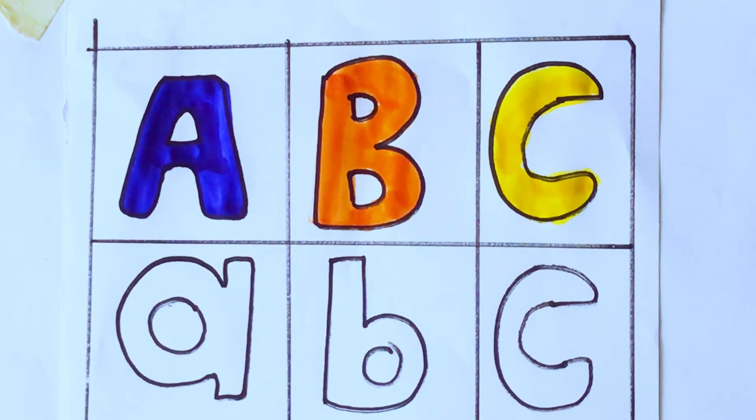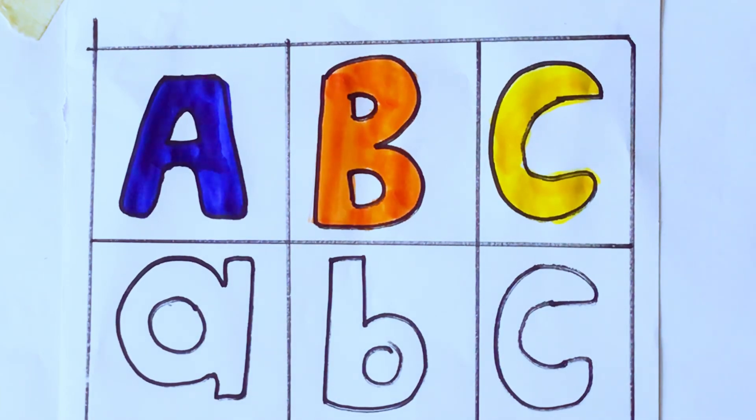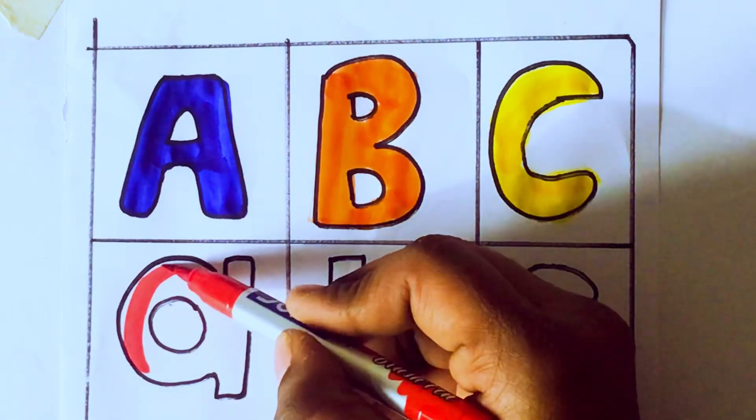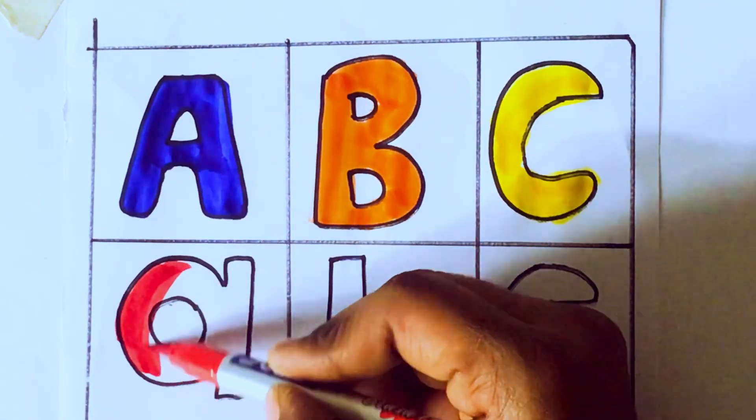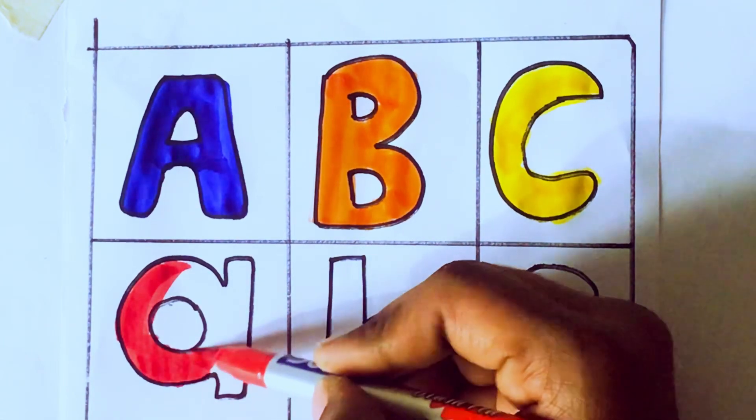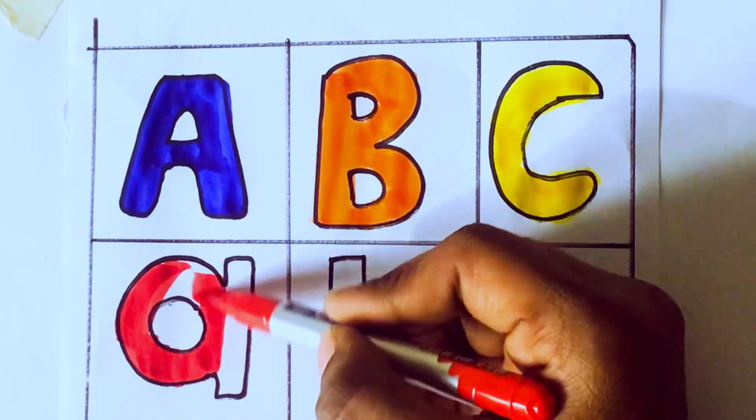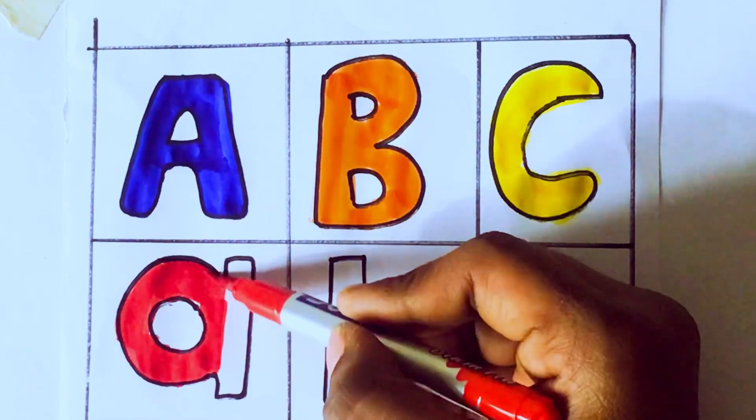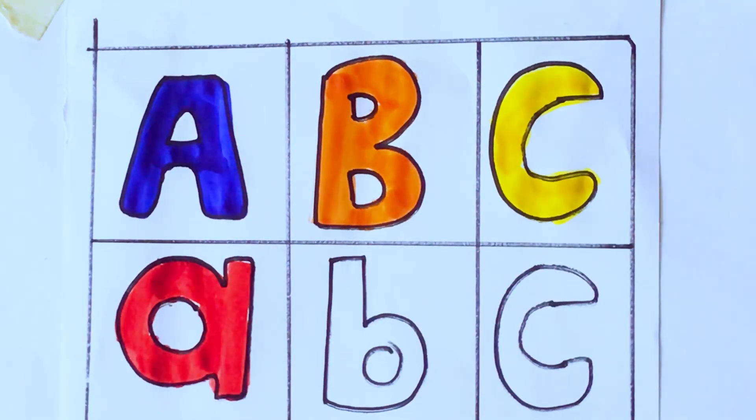Let's do small letters. Red color, a. Small a. A for ant. A-N-T, ant.